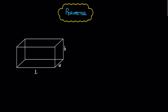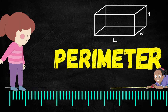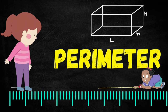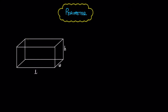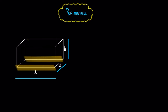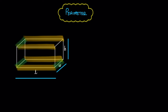Now we move to the first concept: the perimeter. In the figure, the longest edge is the length, the depth of the figure is the width, and the height of the figure is equal to h. This figure has 4 lengths, 4 widths, and 4 heights.